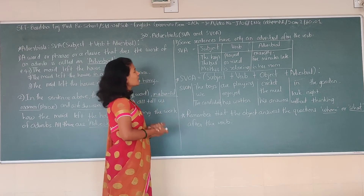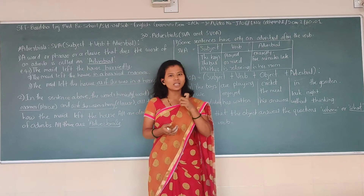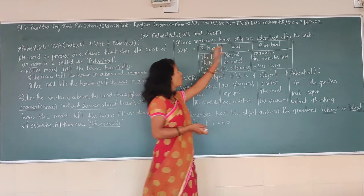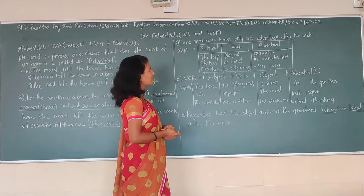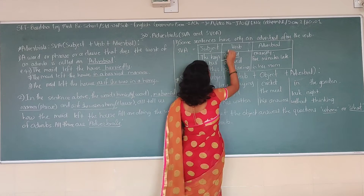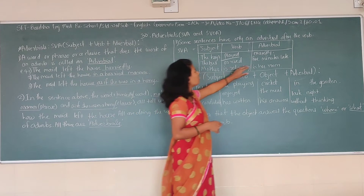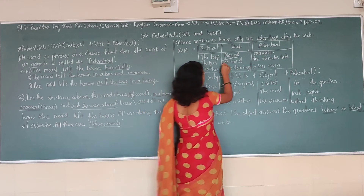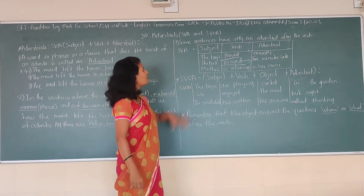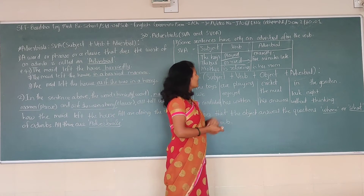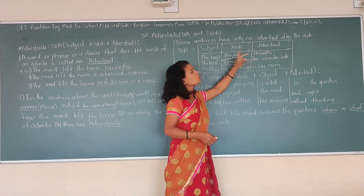Some sentences have only an adverbial after the verb. First: the boys played excitedly — played is your verb and excitedly is the adverbial after the verb. Second: the boss arrived five minutes late — arrived is your action verb and five minutes late is the adverbial. Third: mother is relaxing in her room — is relaxing is your verb, relaxing is the action verb, and in her room is your adverbial.